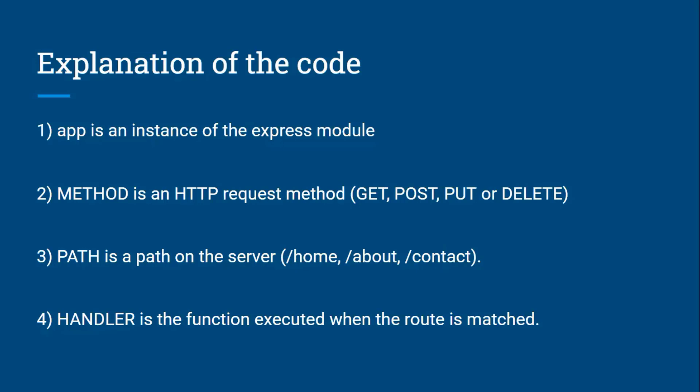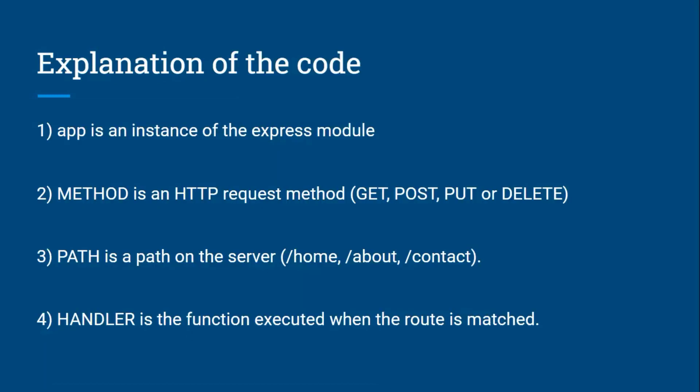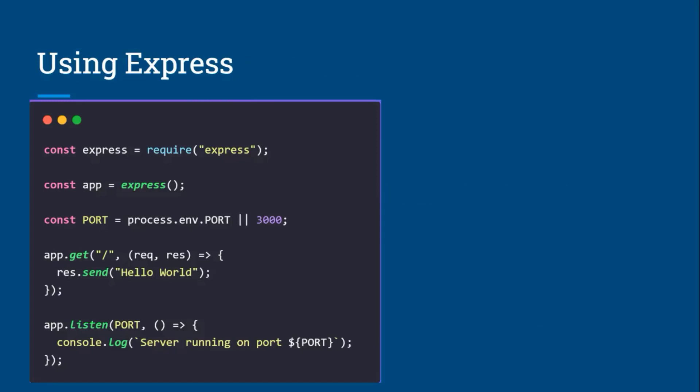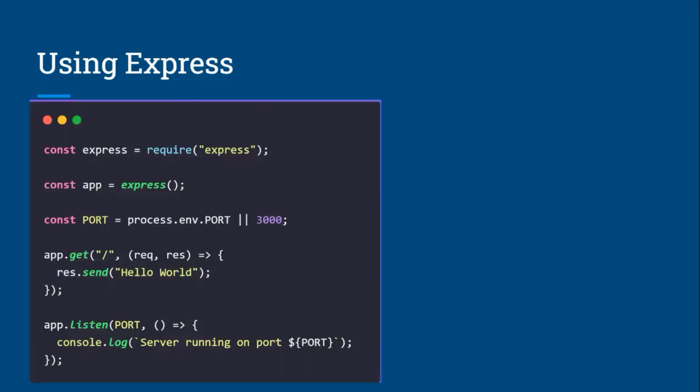The app is the instance of the Express module. The method used here is GET. The path in the first example is just a slash. You can define paths like home, about, and contacts, each with its own handler function.